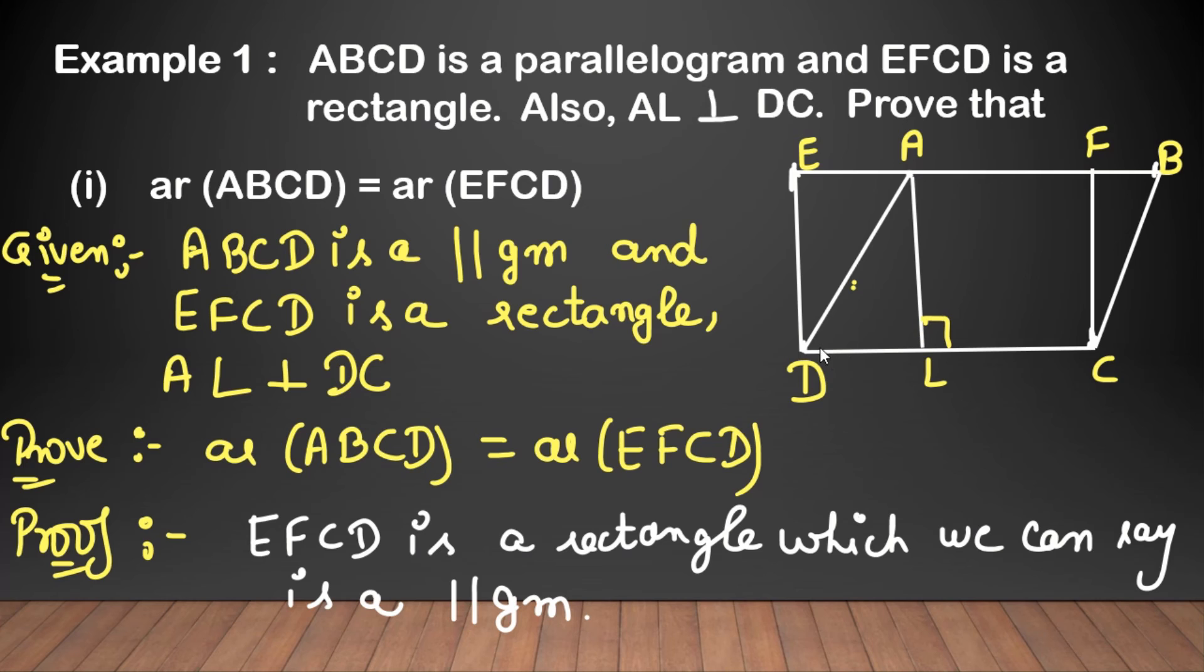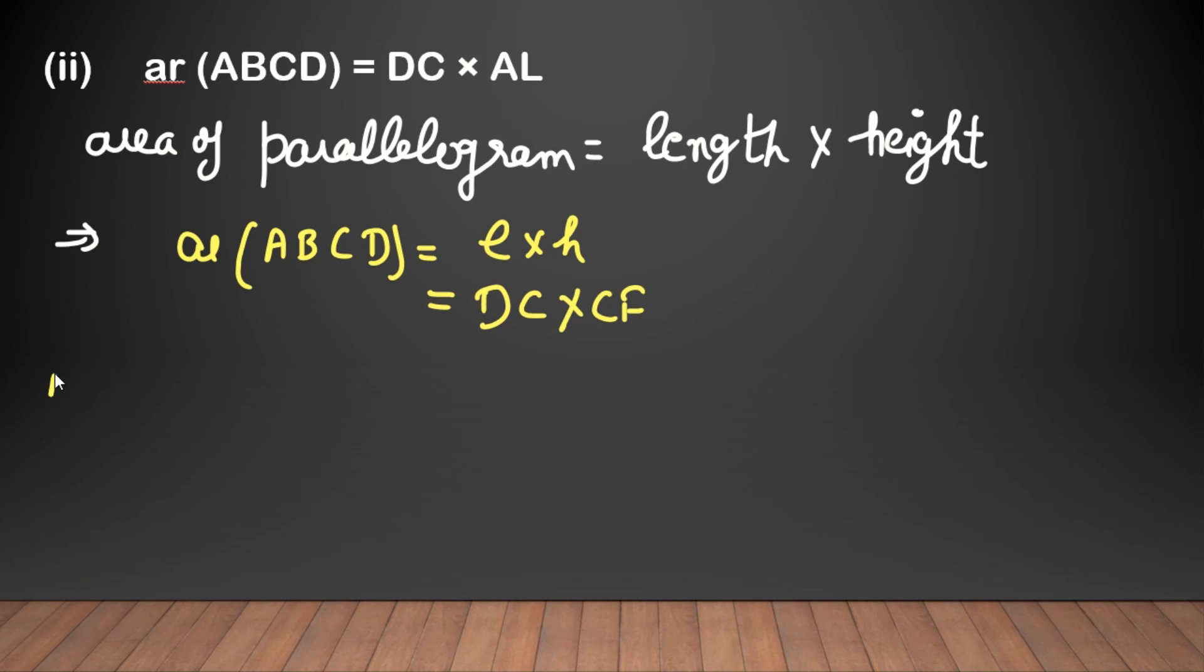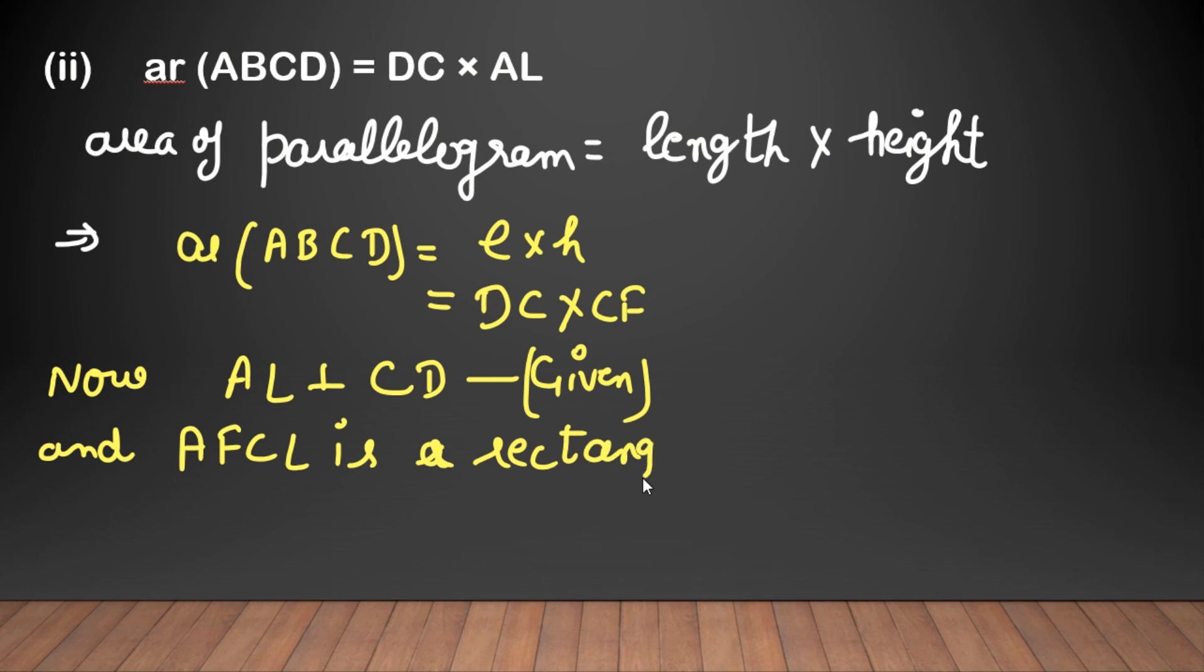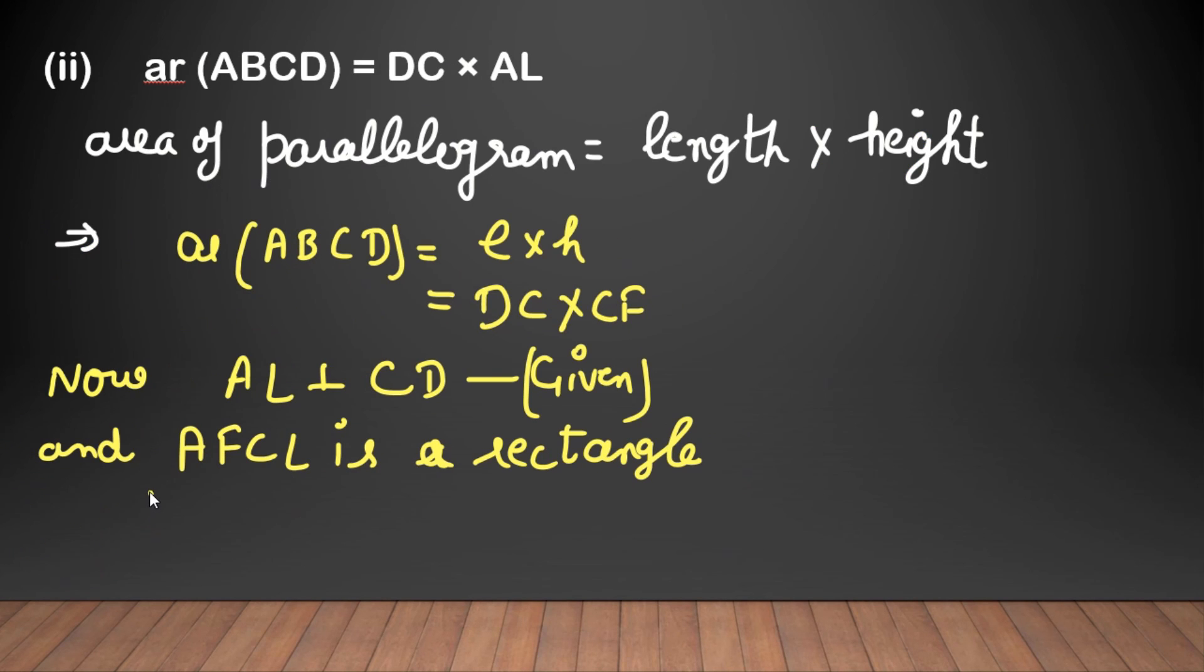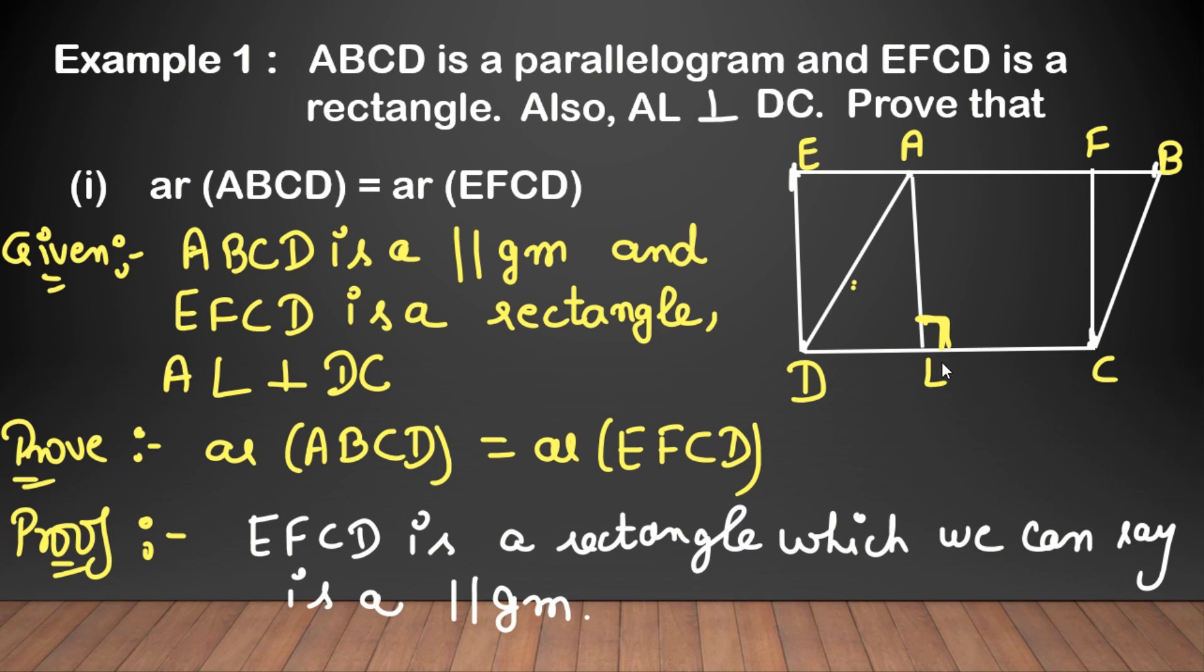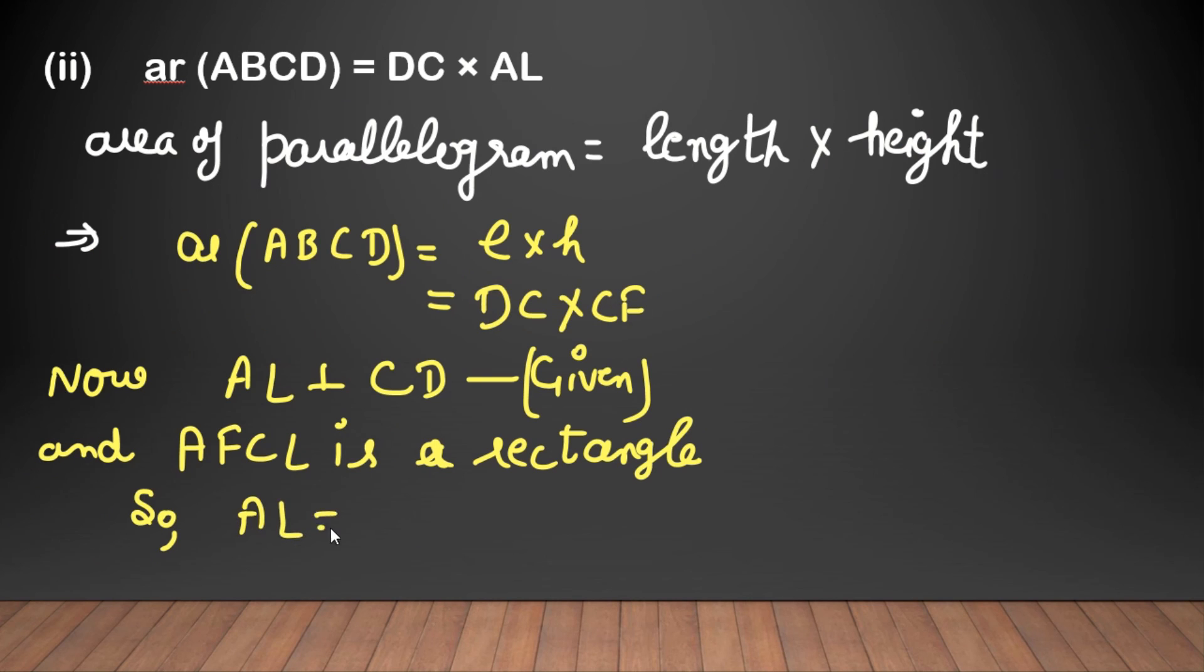Now we can write, AL perpendicular to CD - here we can write this, so AFCL is a rectangle. If it is a perpendicular, we can write this is a whole rectangle. It means AL equal to CF. AL perpendicular to CD, this is given. And AFCL is a rectangle, so if this is a rectangle then we can say AL equal to FC.